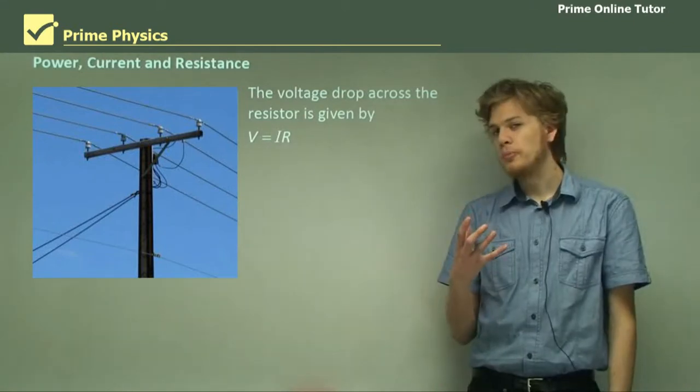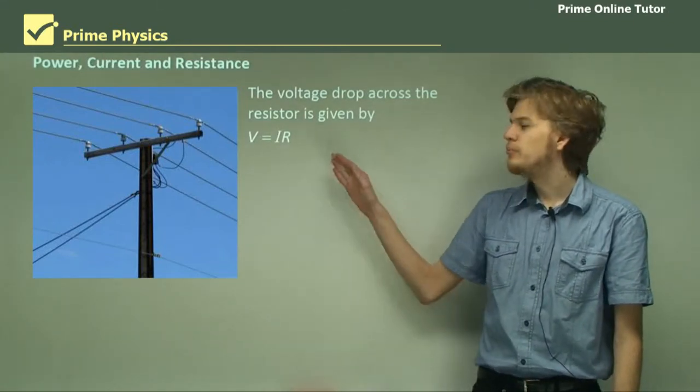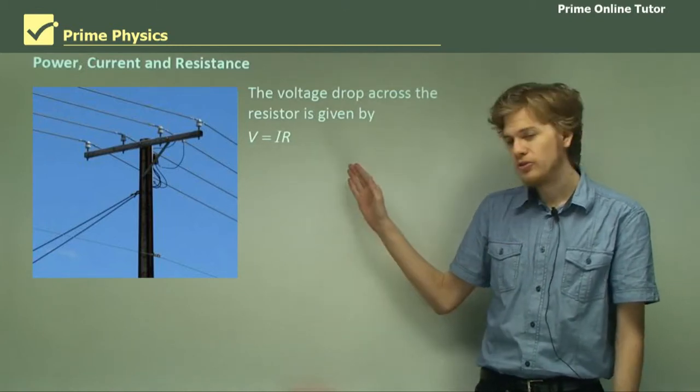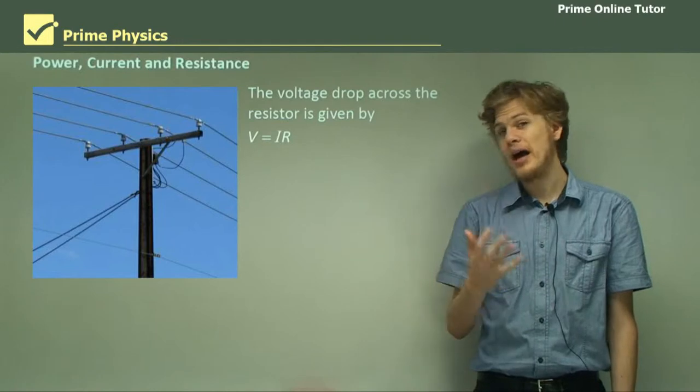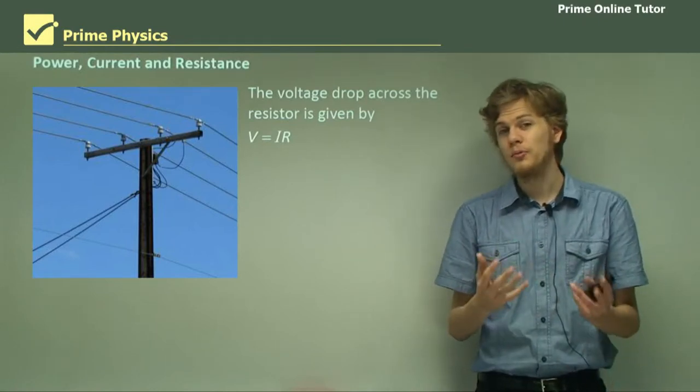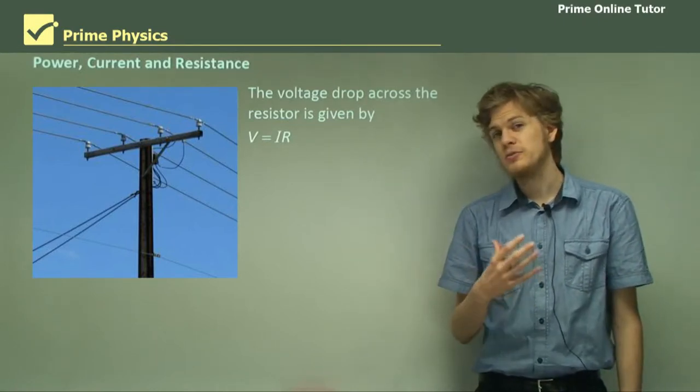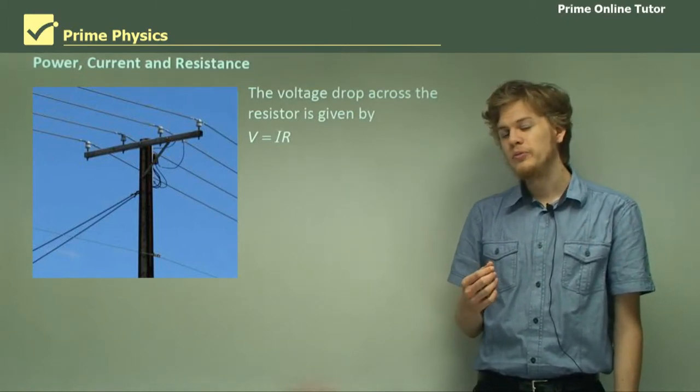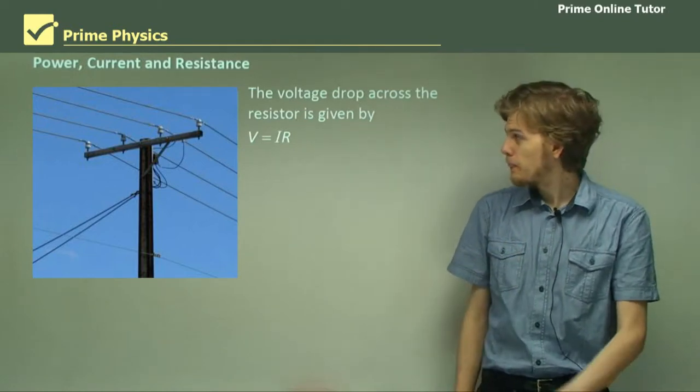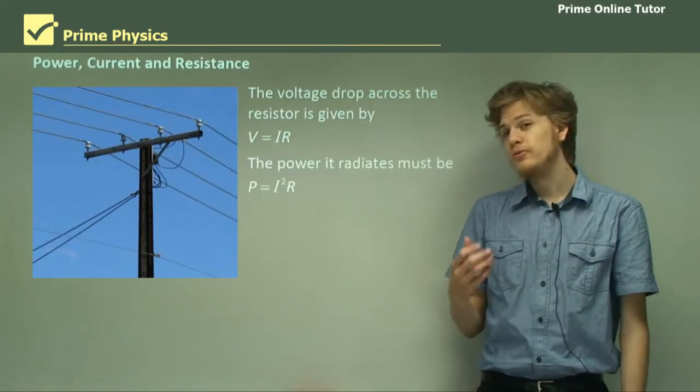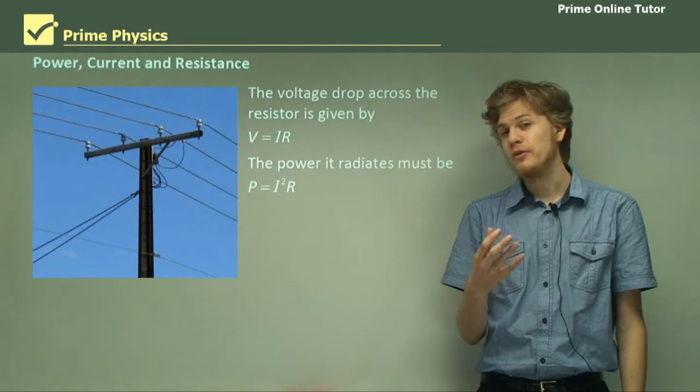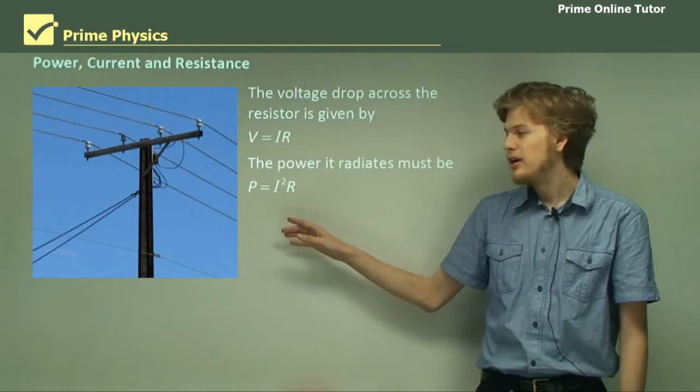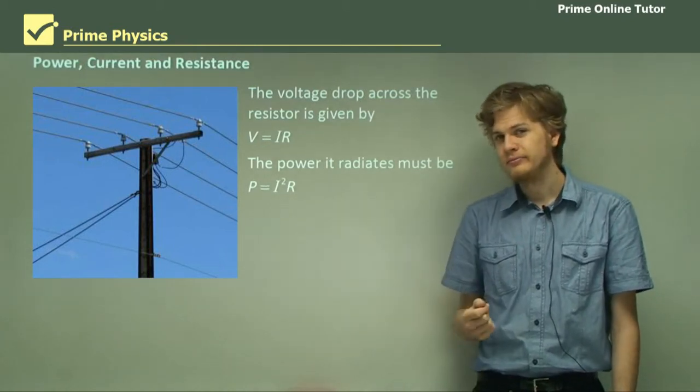So the voltage drop across the resistor is given by V equals IR. And we can combine this equation with our equation for the power radiated by a resistor to find another expression that gives us the power, and this one won't be dependent on both V and I. If we substitute V equals IR into our equation for power, P equals VI, then we have the equation P equals I squared R.